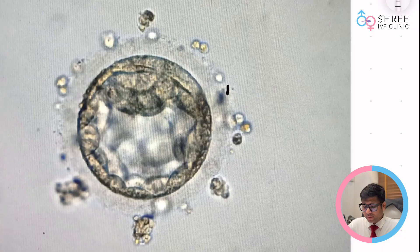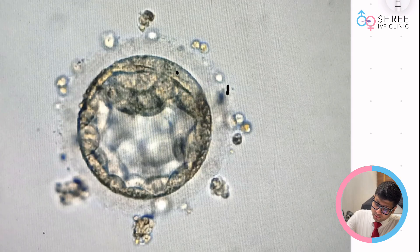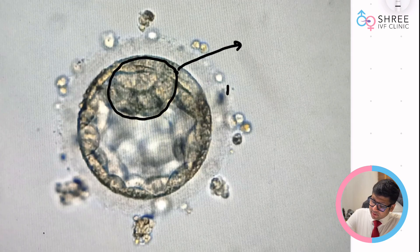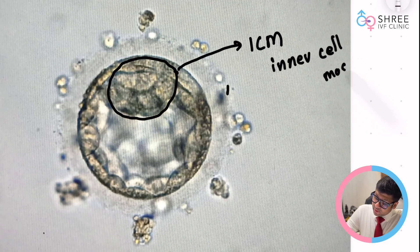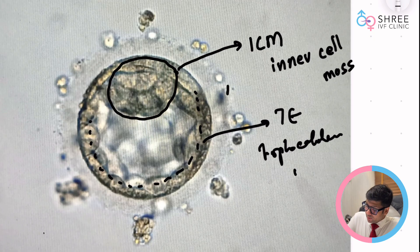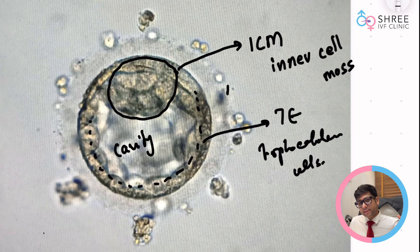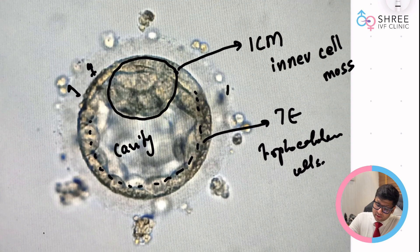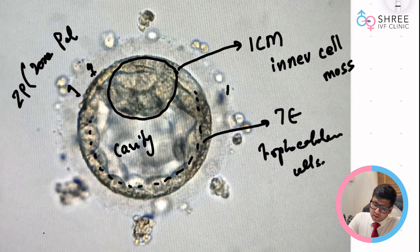This is what a typical photograph of an embryo is going to look like. This part is called the ICM — inner cell mass — which is the part that gives rise to the formation of an actual embryo. These cells marked here in black are called TE, trophectoderm cells, which help form the placenta. The cavity inside is where fluid discharged by the cells has collected.